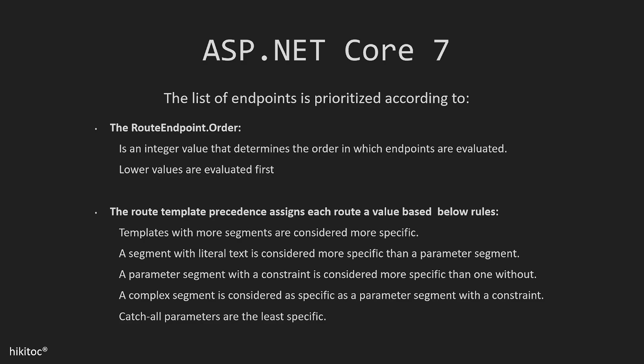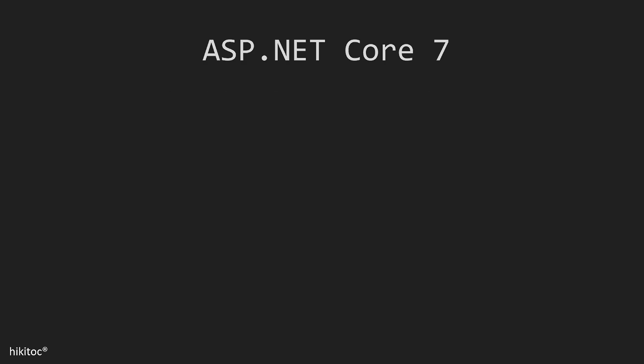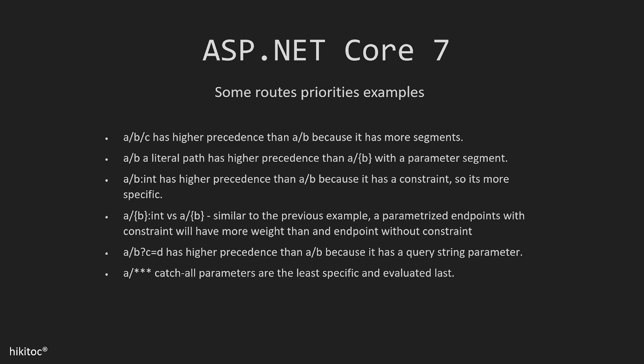Route endpoint order will be discussed in future lessons. The route template precedence is a system that assigns each route template a value based on how specific it is, and follows these rules: templates with more segments are considered more specific; a segment with literal text is more specific than a parameter segment; a parameter segment with a constraint is more specific than one without; a complex segment is as specific as a parameter segment with a constraint; and catch-all parameters are the least specific. You can take a screenshot of the slide to remember for later.